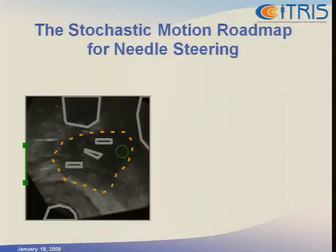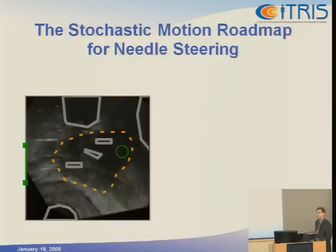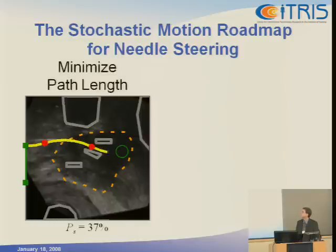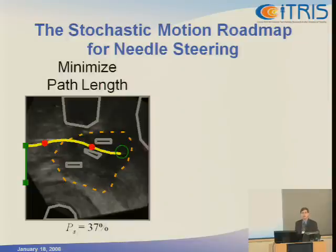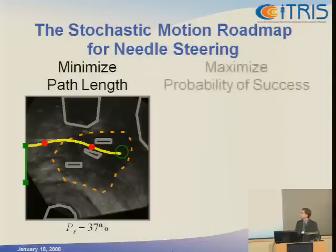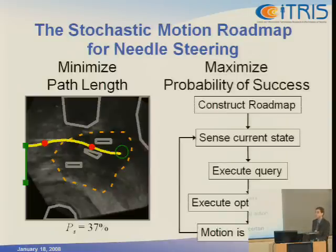In this particular example, we have the prostate outlined in orange, and we can start the needle at the green bar on the left and want to end up at the target indicated by the green circle. A traditional path approach would find just the shortest path subject to the needle's curvature constraints connecting the start region to the target. But this can lead to failures because the needle is guided between narrow gaps between obstacles, and because the needle's motion is uncertain, deflections can cause collisions. As an alternative, we've been looking at planning methods that explicitly try to maximize the probability that the procedure will succeed and reach the target.